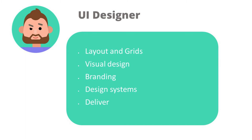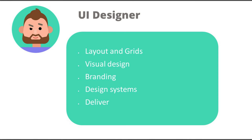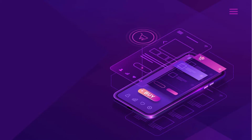Once the UX designer is done with the wireframes, it comes to the UI designer, who defines the layouts and grids for the visual design. The UI designer follows branding guidelines from the company or client, or creates new branding guidelines as needed. They also reference a design system — pre-defined components and elements — and apply visual hierarchy, typography, spacing, and padding. Finally, the completed visual design is delivered to the development team.